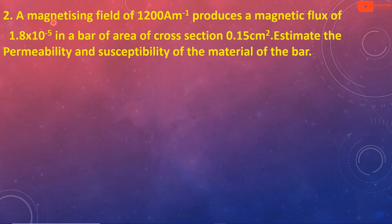Second question: a magnetizing field of 1200 ampere per meter produces a magnetic flux of 1.8×10⁻⁵ in a bar of area of cross section 0.15 centimetre square. Estimate the permeability and susceptibility of the material of the bar.